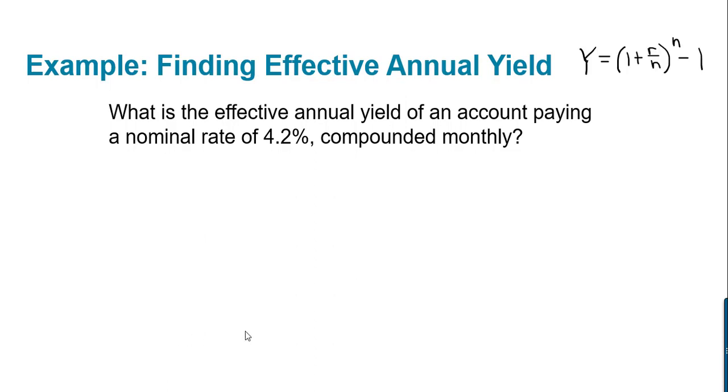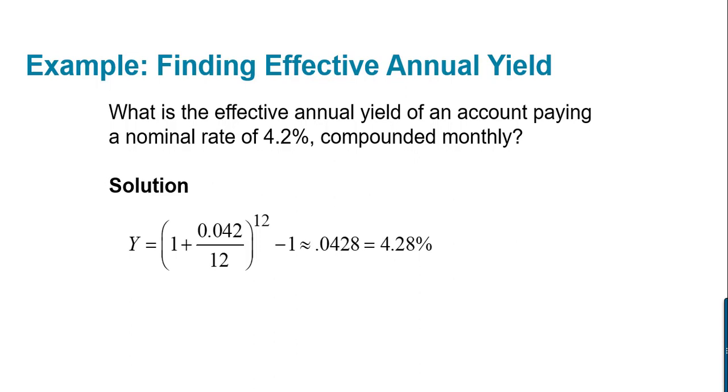Plugging into the effective annual yield formula, 1 plus R over N to the N minus 1, we're going to plug in 0.042 for the rate R, and since it's compounded monthly, we know that the number of compounding periods is 12. This gives us Y equals 1 plus 0.042 over 12 to the 12th power minus 1, which is approximately 0.0428, or 4.28%. So you're actually earning a little bit more, as expected.